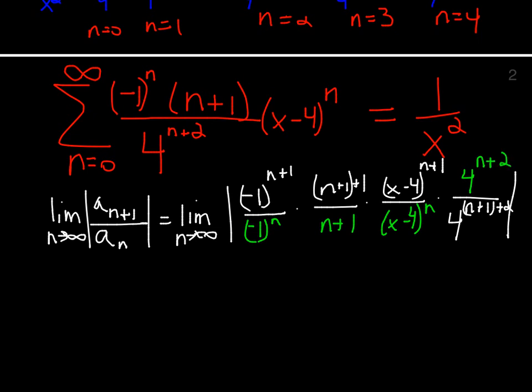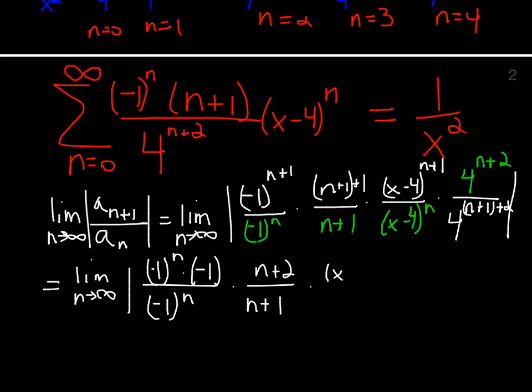We have the limit as n goes to infinity. We'll take negative 1 to the n plus 1 and peel off the negative 1. And then we'll have n plus 2 over n plus 1. We'll have x minus 4 to the n times x minus 4. And then finally, we'll have 4 to the n plus 2. And then 4 to the n plus 2 times 4. That'll give us 4 to the n plus 3. That's up there.